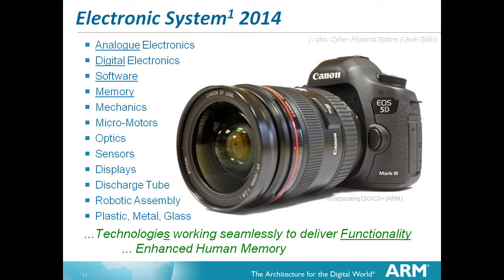If you look at most systems that surround us, the things that we pay for improve our lives. We're still animals, and things important to us are things we want to have. A camera enhances our memory; an organiser tells you when your meetings are; a phone allows you to speak to people at a distance. These are all enhancements of human life — we are becoming the ten-thousand-dollar man.